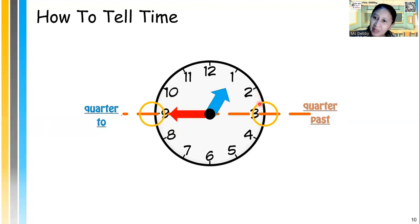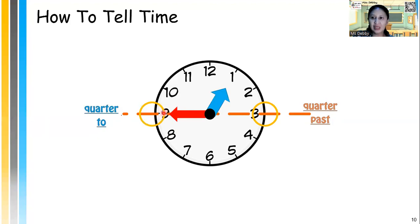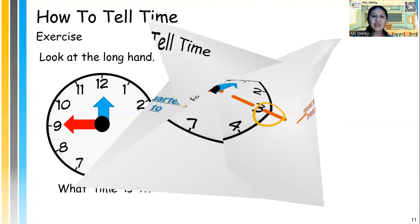It's 5, 5, 5 minutes — the total is 15 minutes. So it's quarter past. And if the long hand points at number 9, it's quarter to.